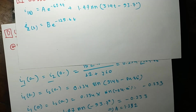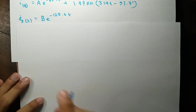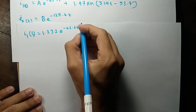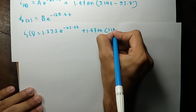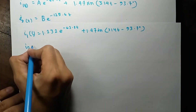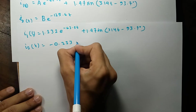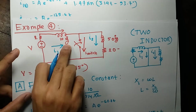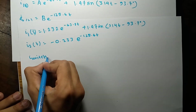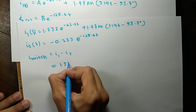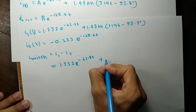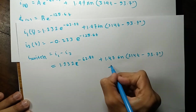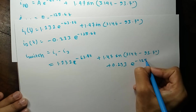We have found I1 and I2 completely. I1(t) = 1.232·e^(−62.8t) + 1.47·sin(314t − 93.7°). I2(t) = −0.233·e^(−125.6t). The current through the switch is I1 − I2, which gives: 1.232·e^(−62.8t) + 1.47·sin(314t − 93.7°) + 0.233·e^(−125.6t), since minus times minus gives plus.